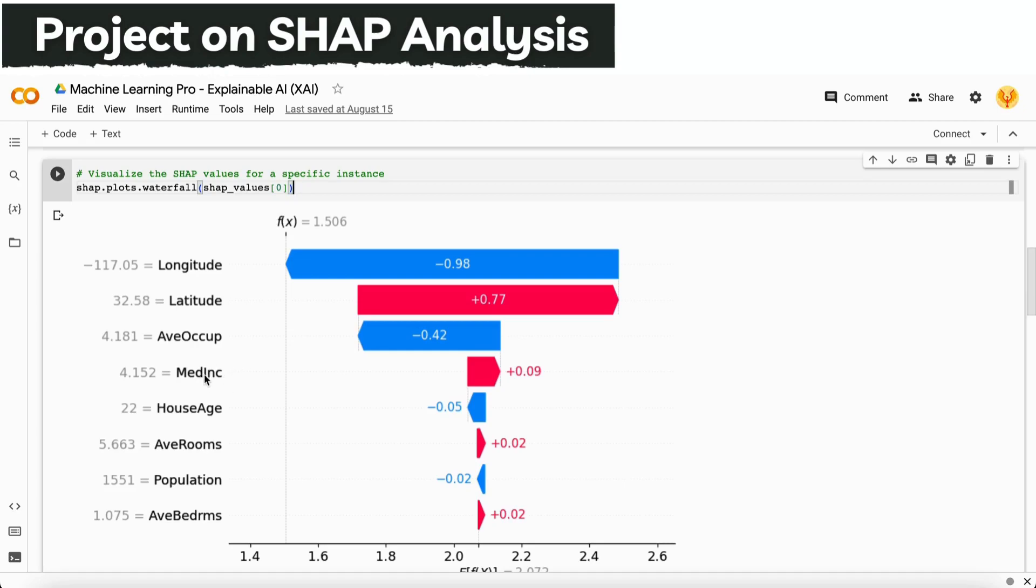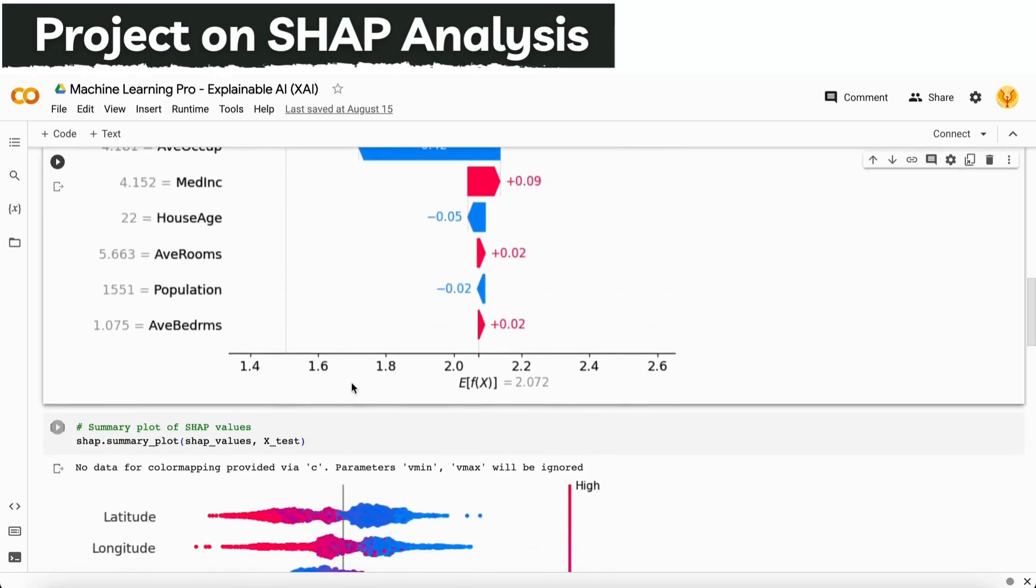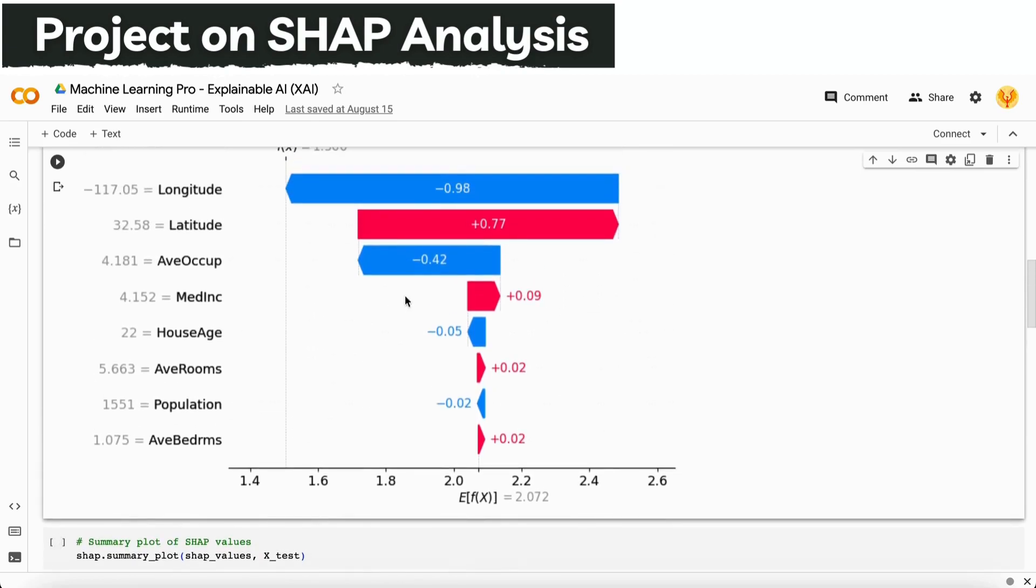Average occupancy is also negatively correlated, median income is also positively correlated. That means if median income values are getting high, the house price is also getting high. If average occupancy is getting low, the house price is also getting high. In that way we can explain our model from this waterfall plot.